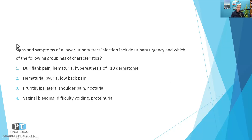Here we go. I'll read it to you, give you a moment to respond, and then we'll talk through it. Signs and symptoms of a lower urinary tract infection include urinary urgency and which of the following groupings of characteristics? One: dull flank pain, hematuria, hyperesthesia of the T10 dermatome. Two: hematuria, pyuria, low back pain. Three: pruritus, ipsilateral shoulder pain, nocturia. And four: vaginal bleeding, difficulty voiding, proteinuria.